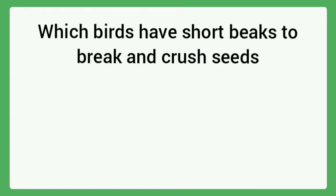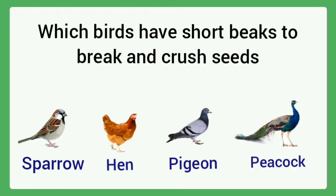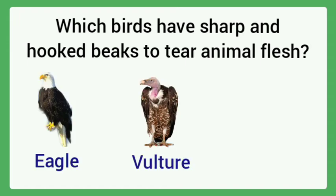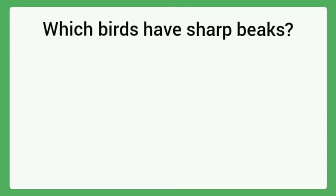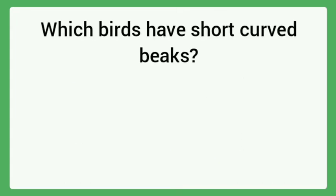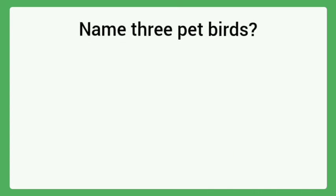Which birds have short beaks to break and crush seeds? Sparrow, hen, pigeon, peacock. Which birds have sharp and hooked beaks to tear animal flesh? Eagle, vulture. Which birds have sharp beaks? Crane and woodpecker.